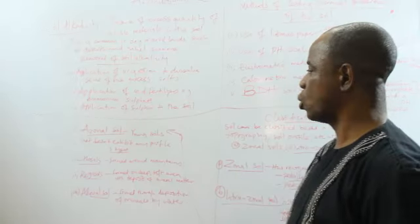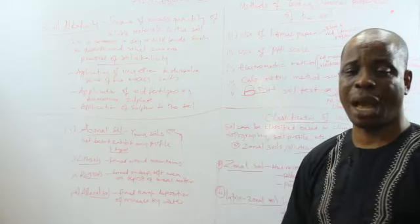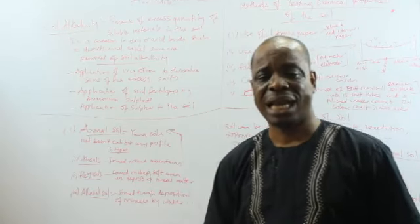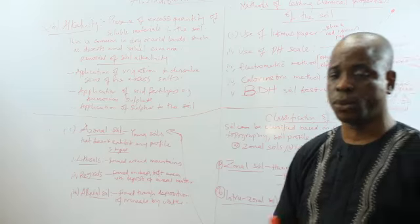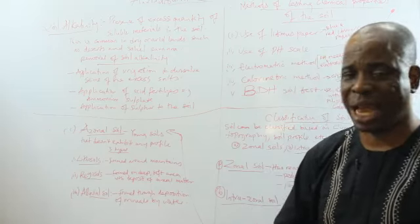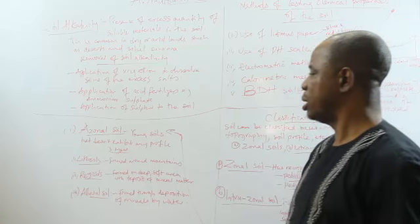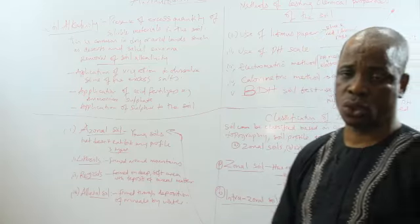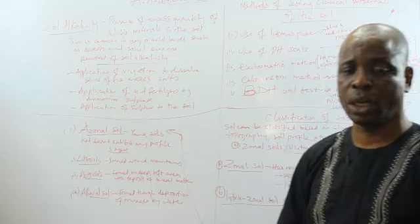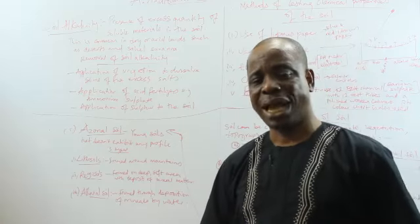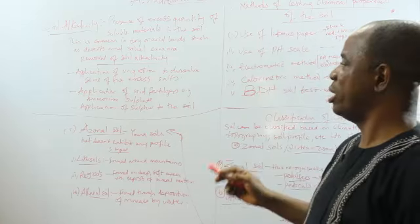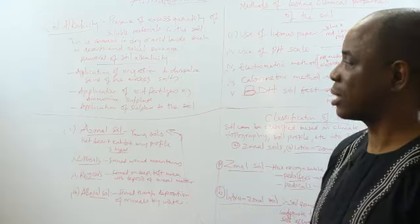Then you can also apply acid fertilizer like ammonium nitrate or ammonium sulfate. This will neutralize the excess salt and release it to the crops. Then you can also apply sulfur to the soil. When sulfur is put to the soil, it reacts with excess salt and neutralizes it. These are ways to tackle alkaline soil.